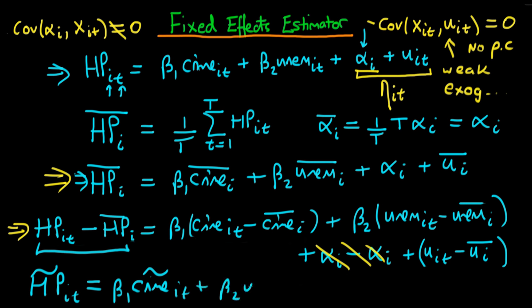plus beta 2 times unemployment i t tilde, because in both of these cases again I have transformed these variables by taking off their time mean values.